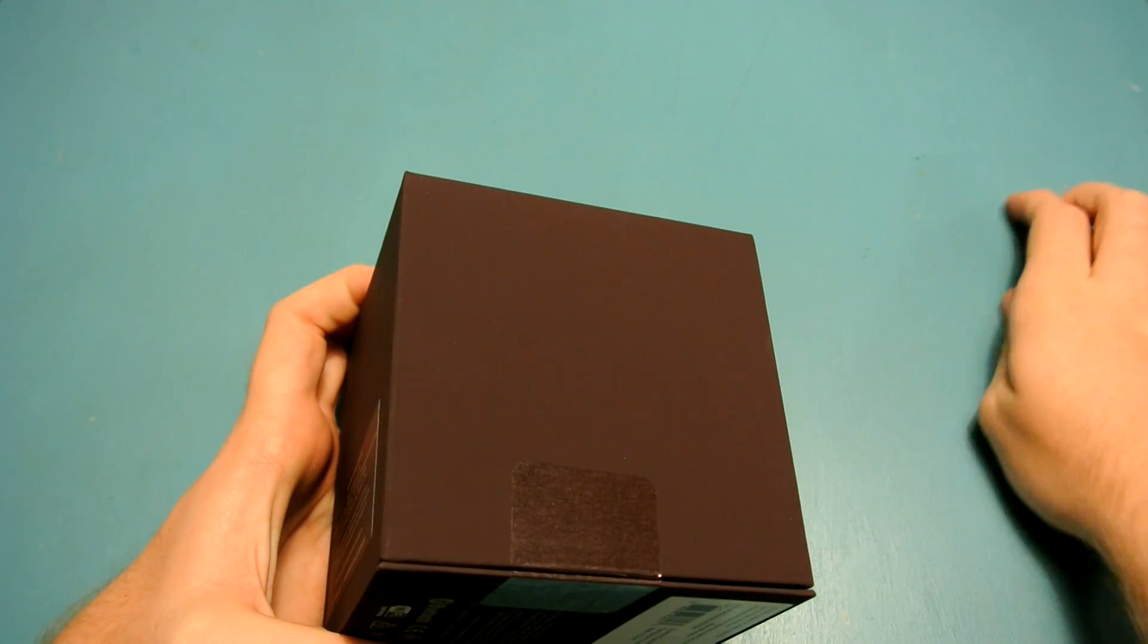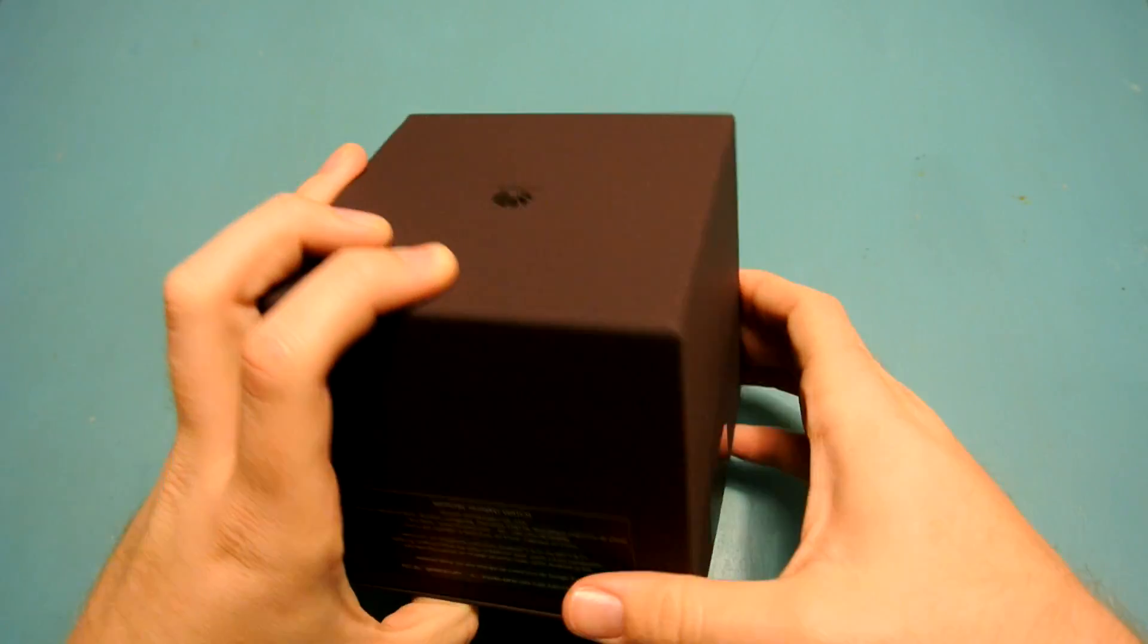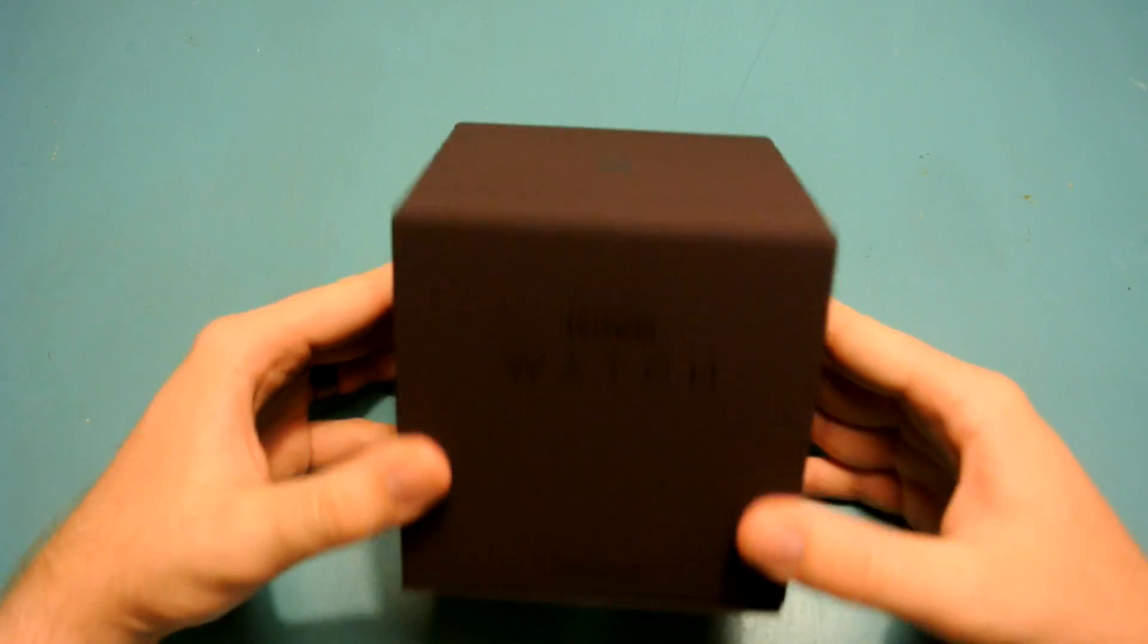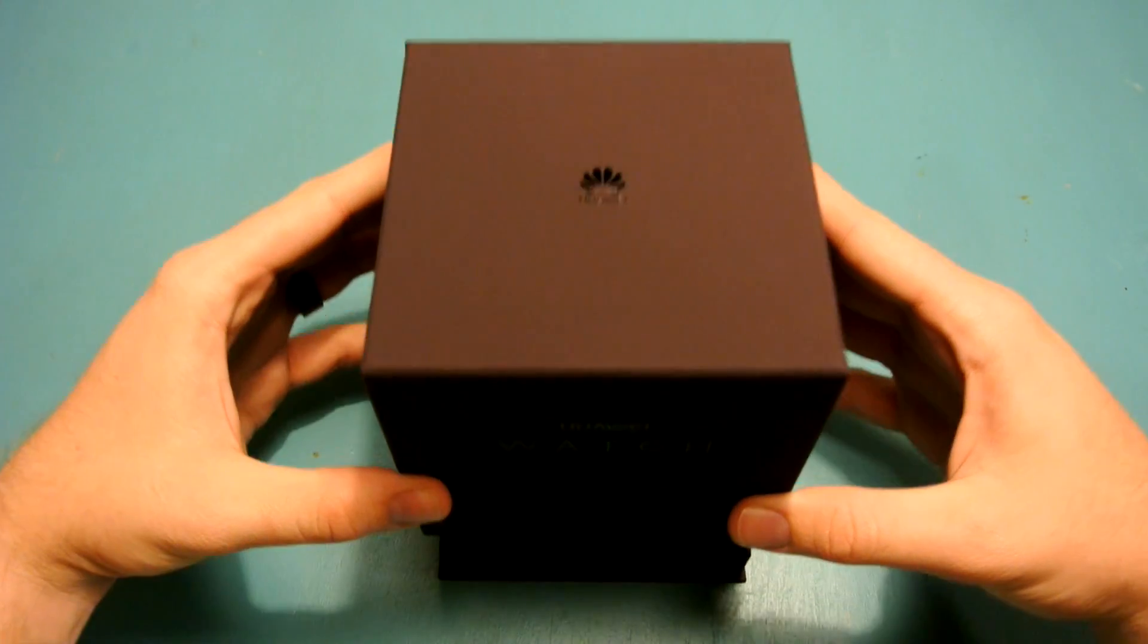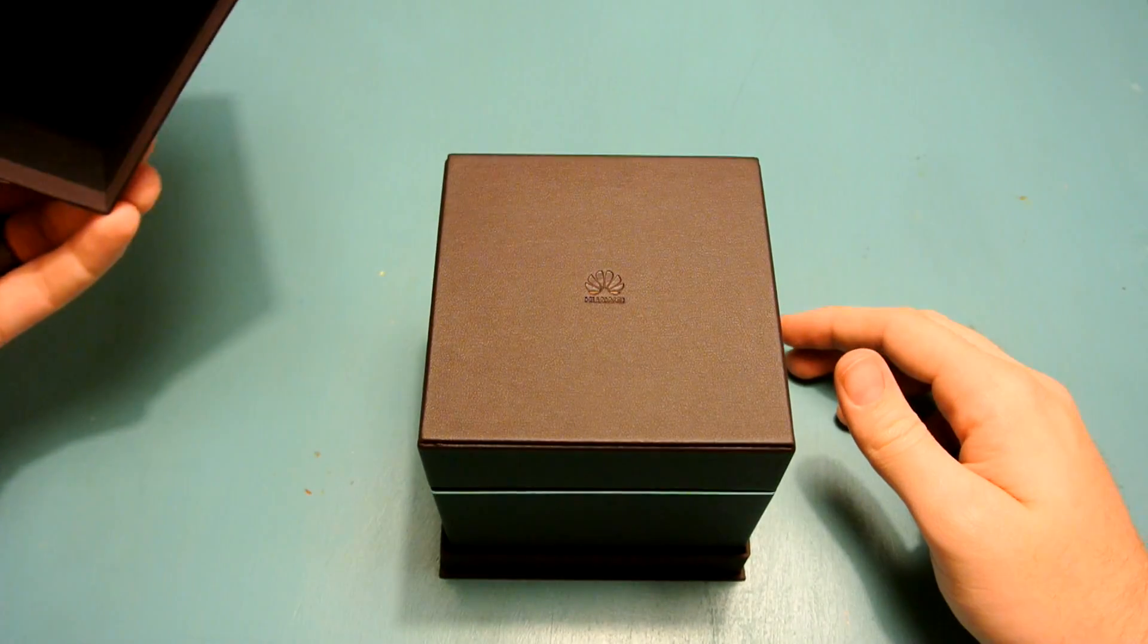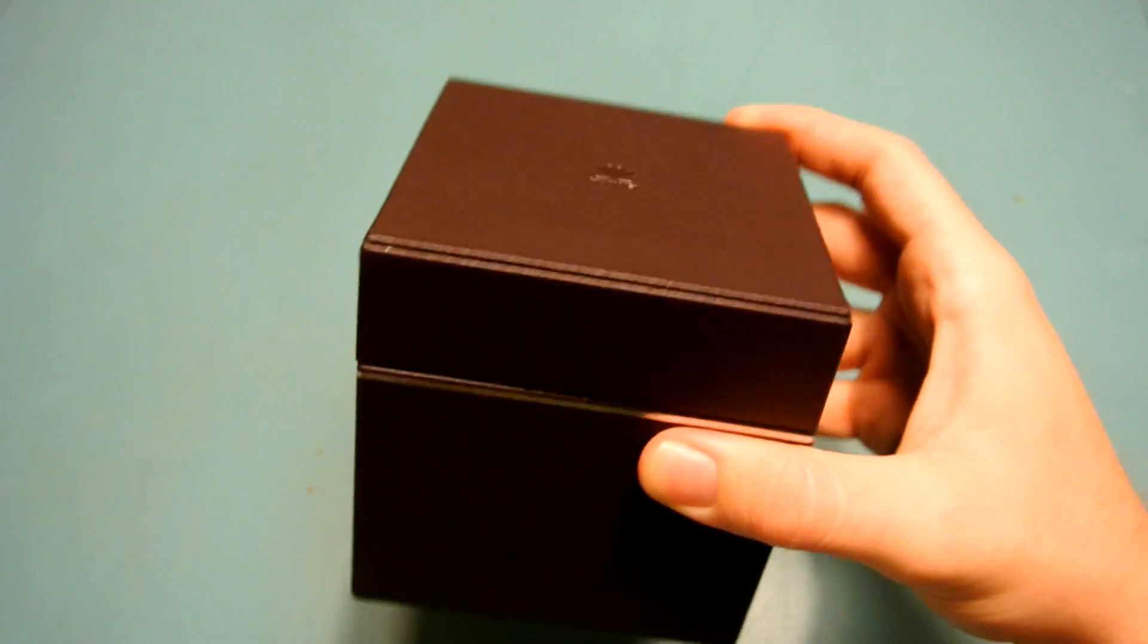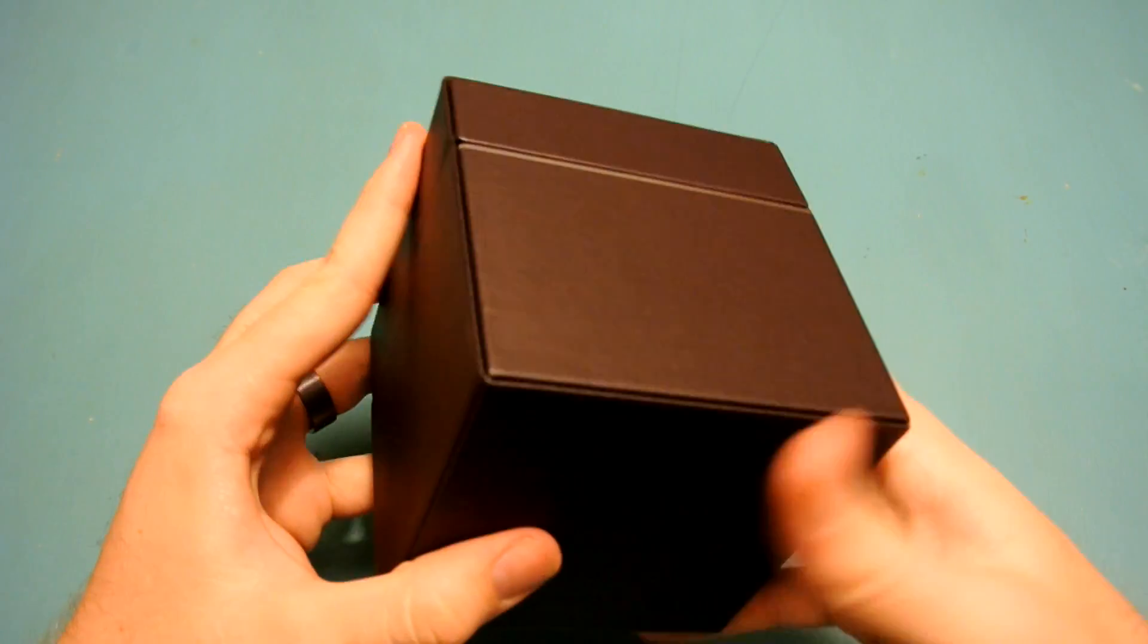So just cut the two slits on the side here, and we will just pop the top off. It just slides up. And lift it up here. And on the inside is another box. So this lifts out, this is like a very nice jewelry box, basically, for a real watch.